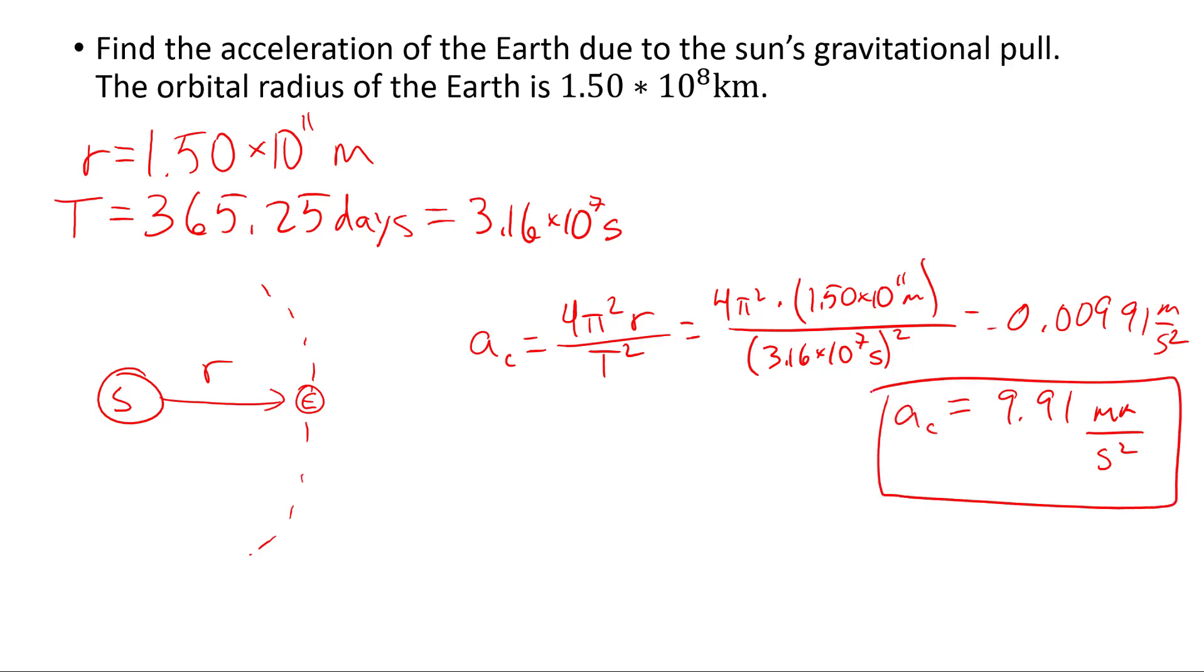So the Earth is accelerating towards the Sun at a very, very small rate. It's about 1 ten-thousandth the rate that we accelerate towards the Earth due to the Earth's gravitational field.